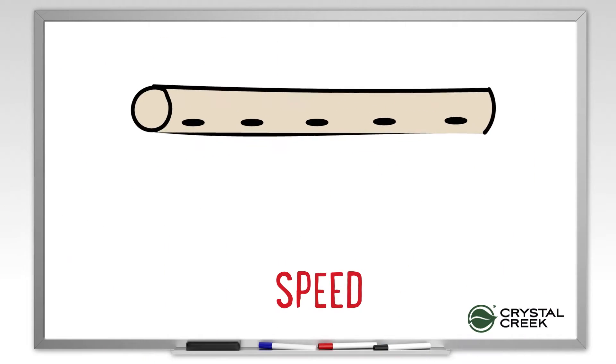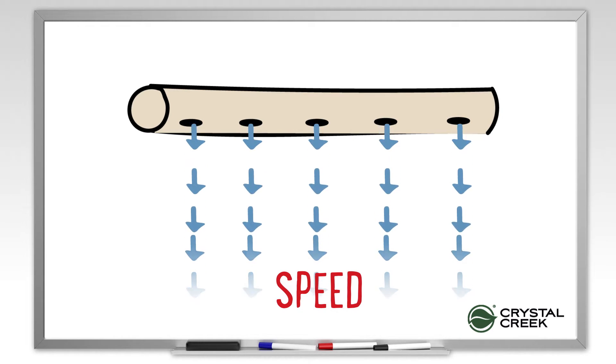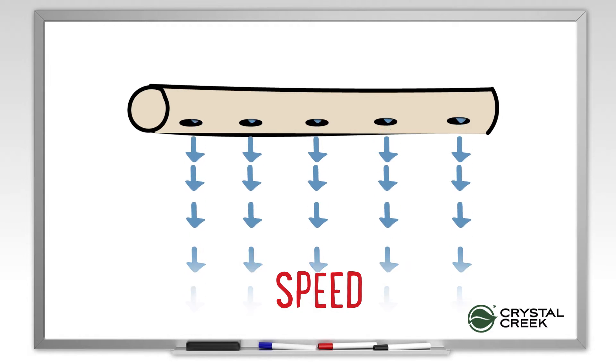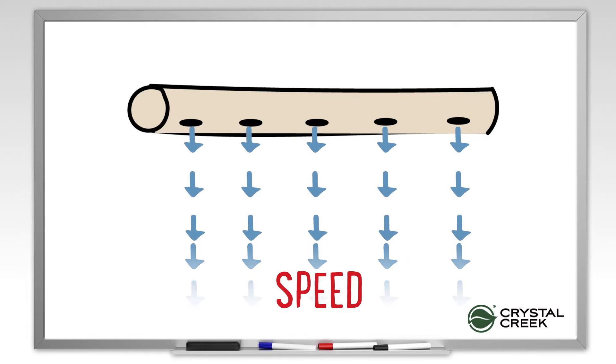The speed of the air delivered to the calf is dependent on the size of the hole in the duct and the distance the air has to travel.